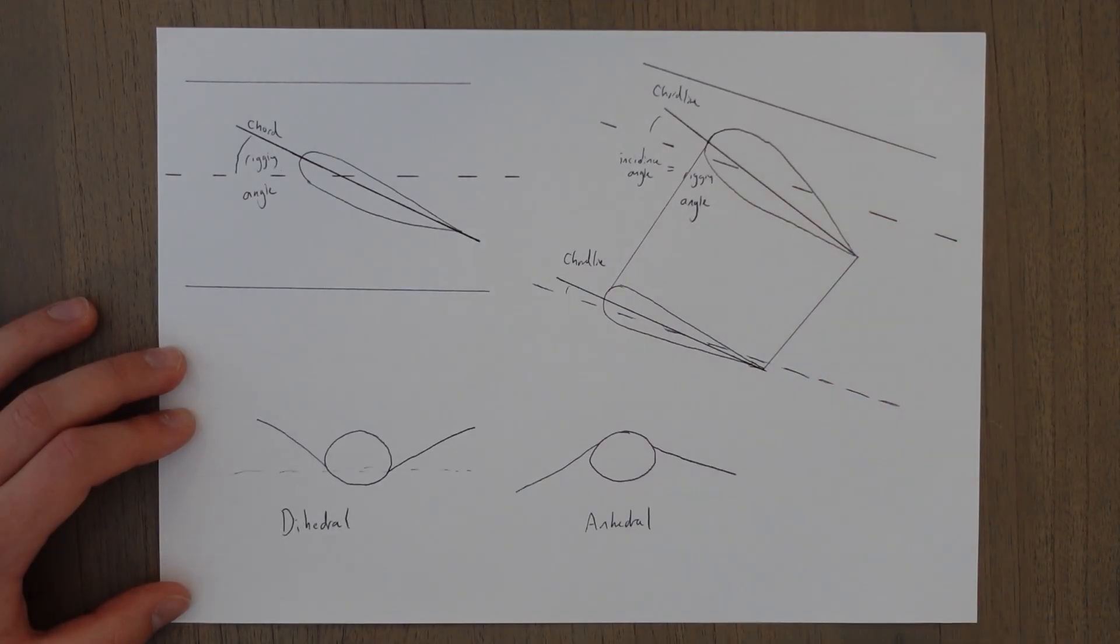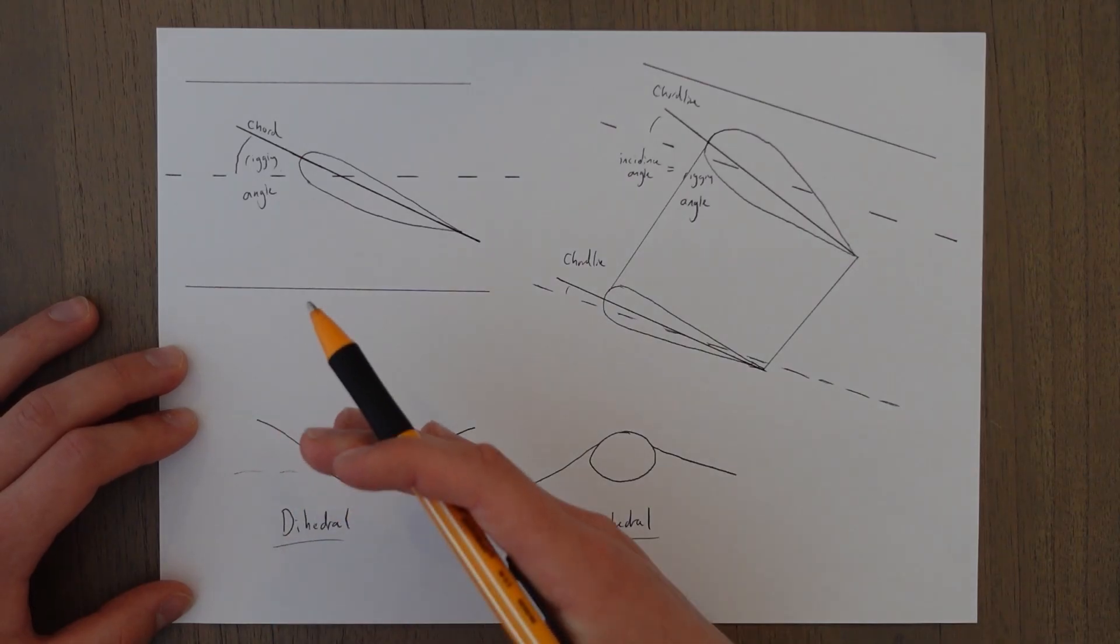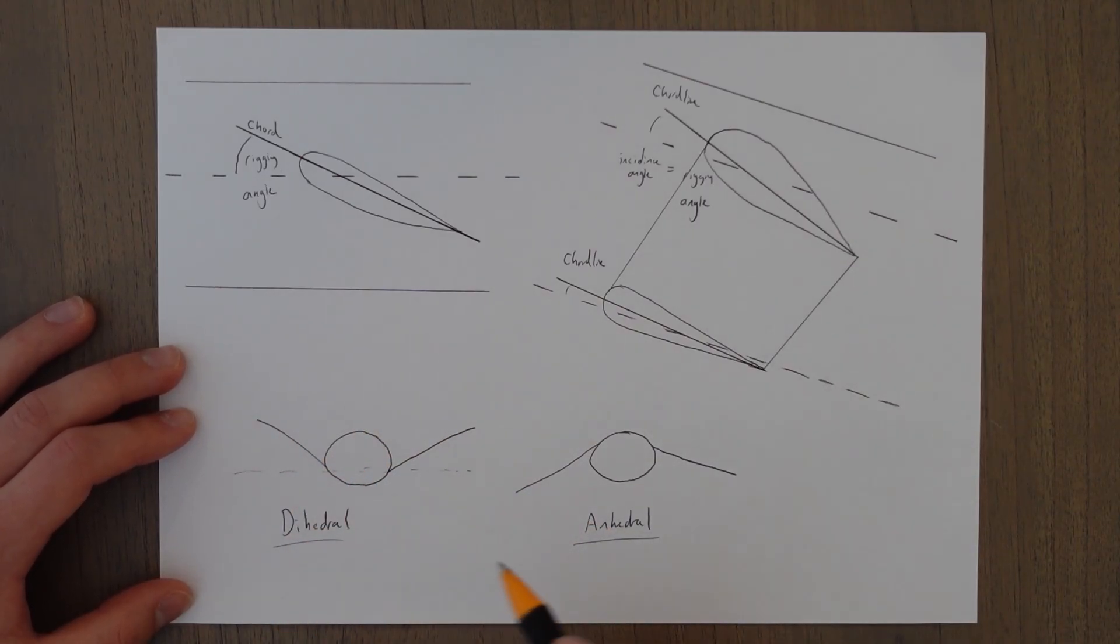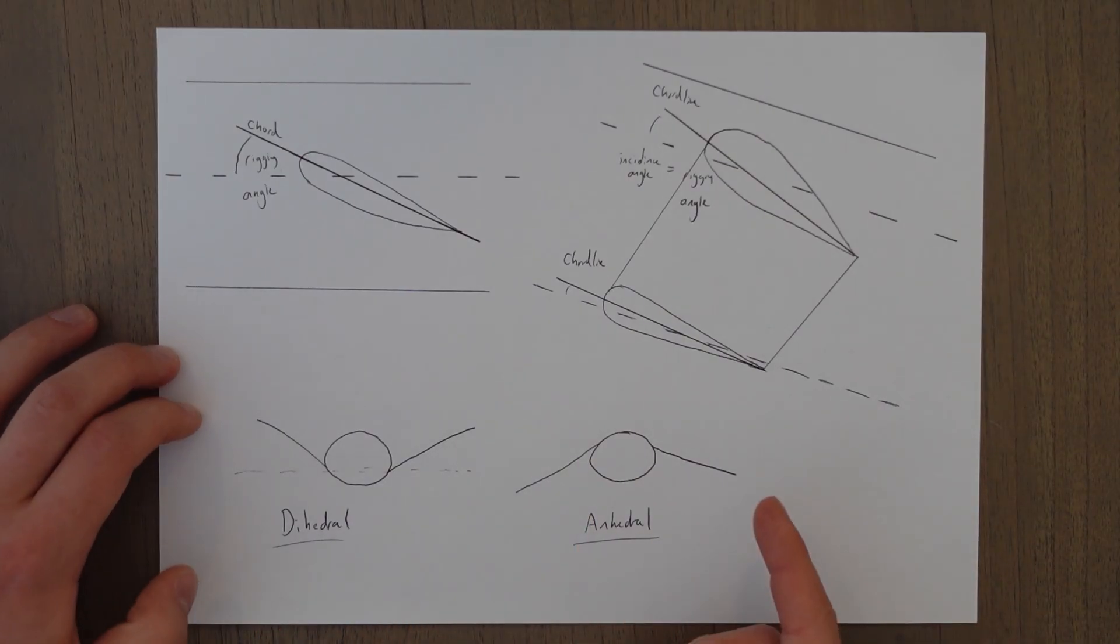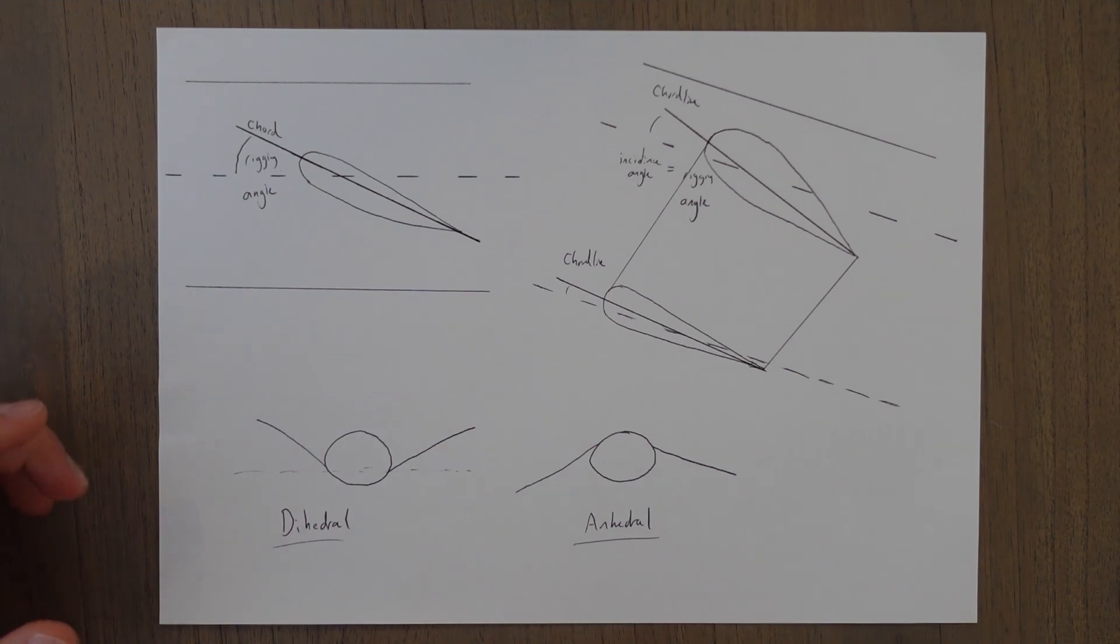The final property to talk about is dihedral and anhedral. This is very similar to the sweep angle in a way because it is the angle between the lateral axis and the wing but it's up the vertical axis rather than in the horizontal. So anhedral wings droop down from the aircraft and dihedral wings slope up from the aircraft. It's an easy way to remember the difference between the two. It's very cheesy but if you die you go up to heaven hopefully. All right, definitions done. Now let's look at some designs.